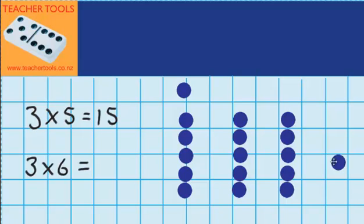Now I'm going to move one more to this group up here and one more to this group up here. So you can see that three times six is the same as three groups of five, which we've got here.